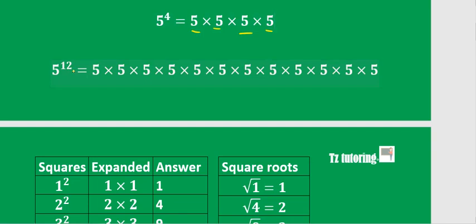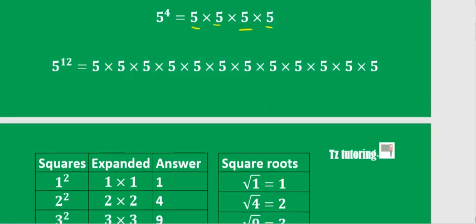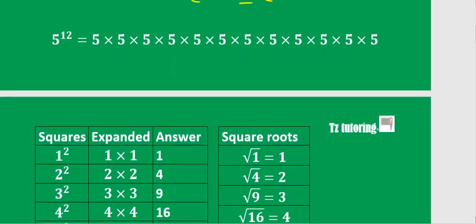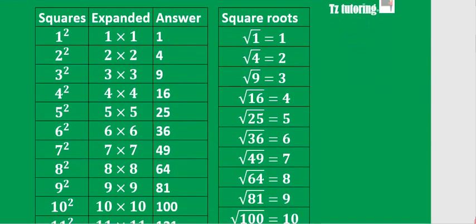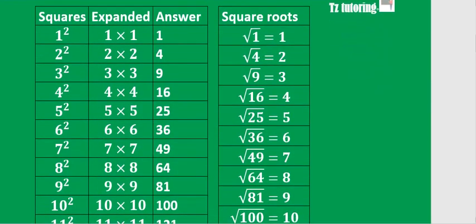And of course 5 to the power of 12, when you expand it, means that you would multiply 5 by itself 12 times. All right, let's move on to squares.